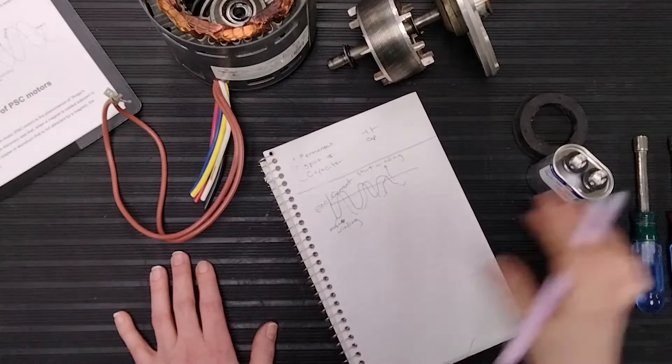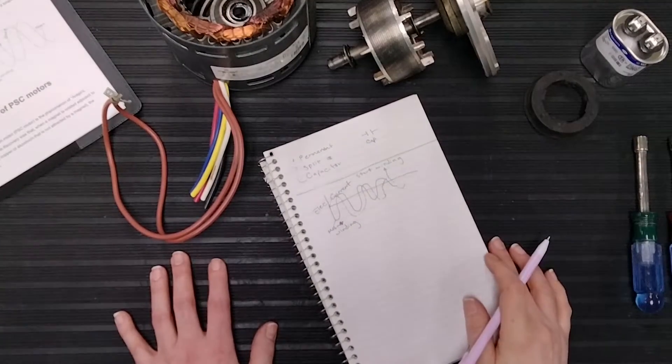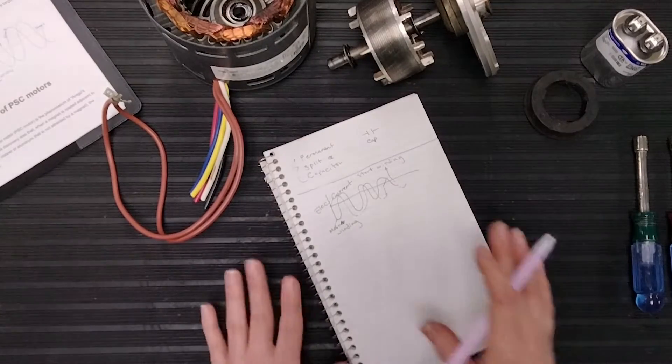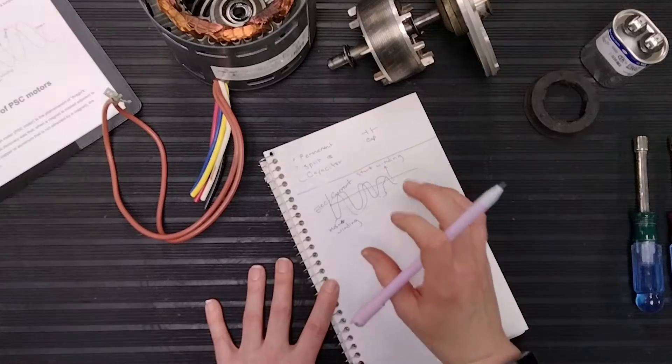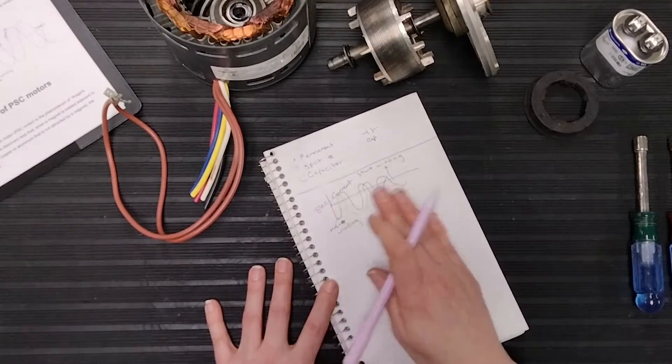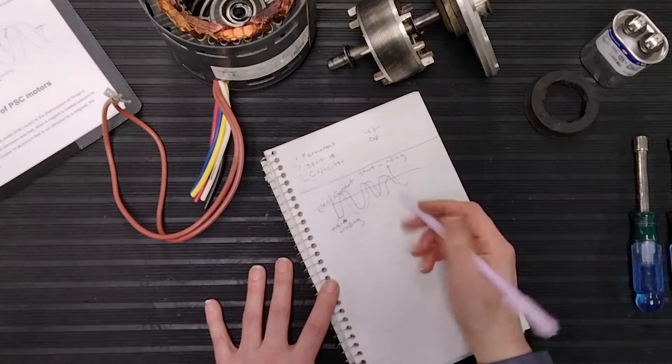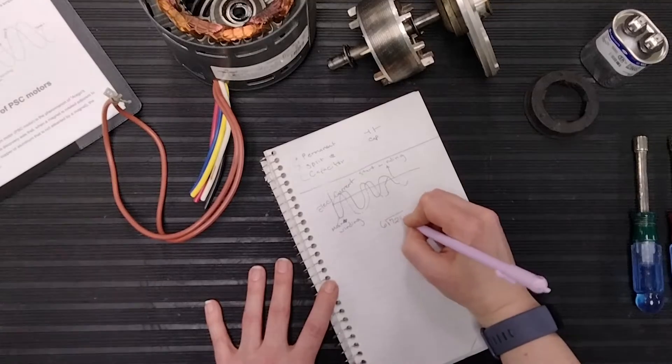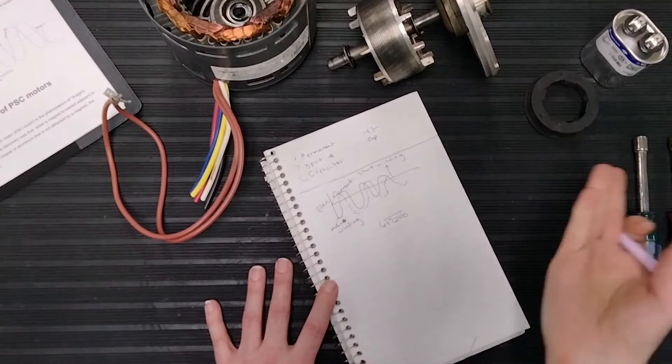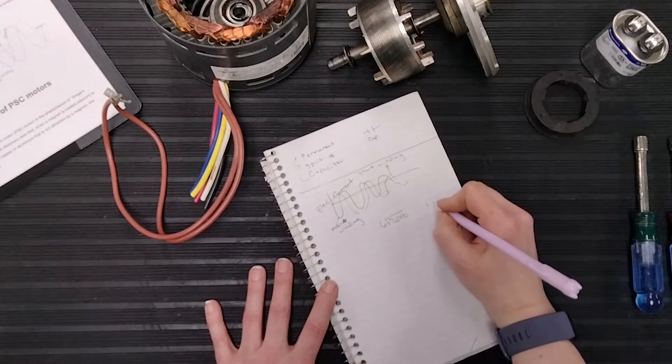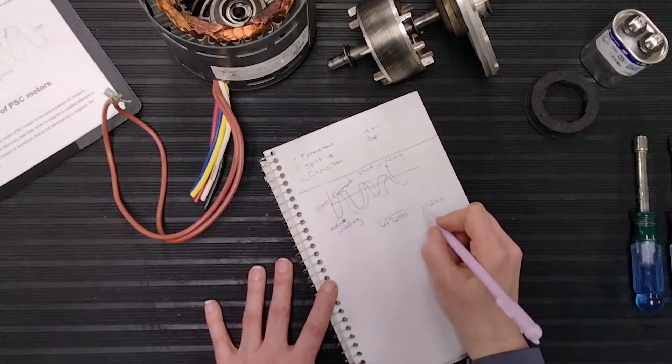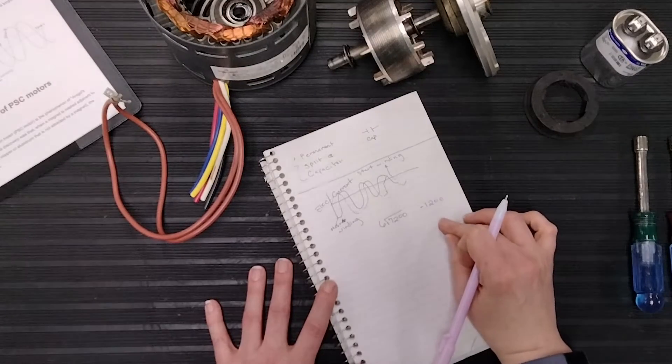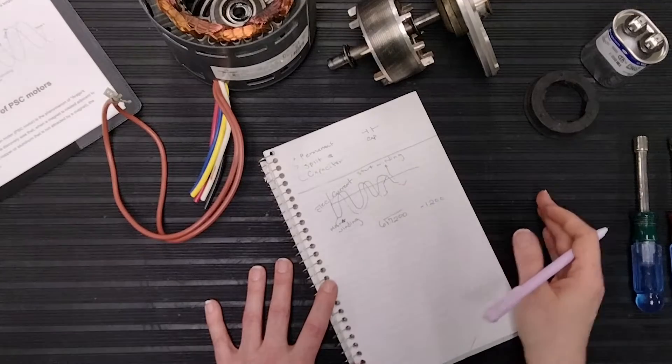Again, we do have to account for slip or motor slip as we spoke about in our previous videos. So again, keep this in mind, the reason why we're going over this is you're not using the full rotation. So if you have a six pole motor and we're dividing it by our 7200 to get our RPM, like we mentioned before.